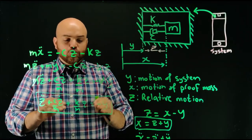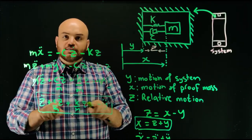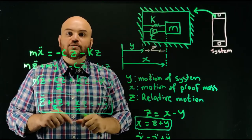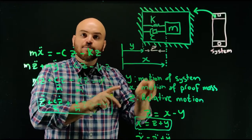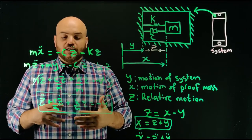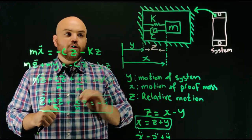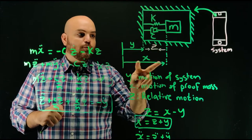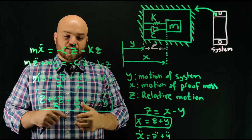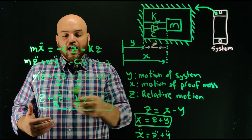This is pretty cool because you can see that the mass of your system — the mass of your cell phone — does not appear in this equation. All you really need to know is the proof mass of the accelerometer itself, and then you can put this accelerometer on any system and it can measure that system's acceleration. It's all relative motion — you don't need to know the actual motion of the body or the mass individually, just the relative motion of the mass relative to the casing. This is the fundamental equation.